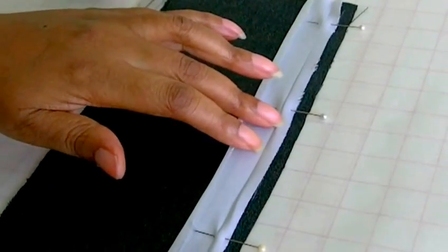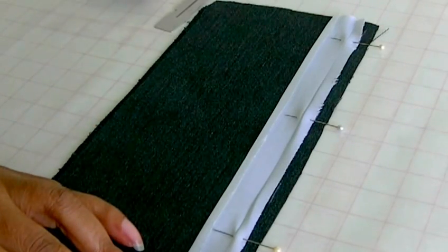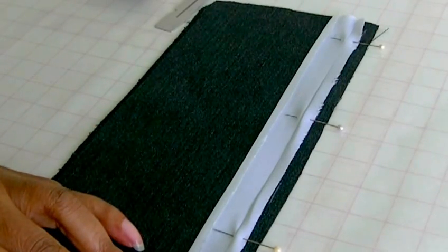So just a light iron. You don't want to iron out the crease line of the original bias binding, and then I'm ready to take it to the sewing machine and sew.